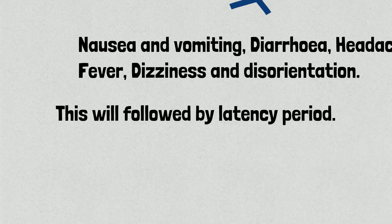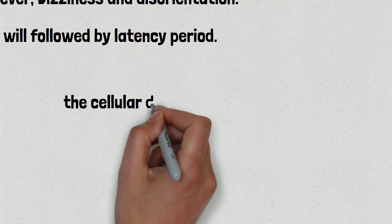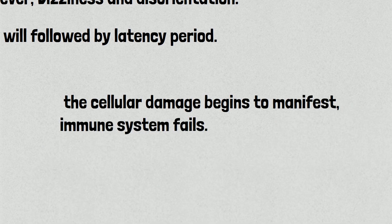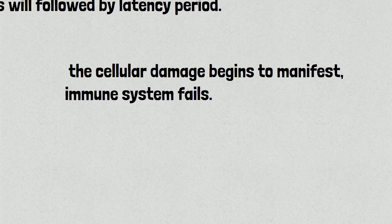This will be followed by a latency period. During this period the person appears to recover but they actually do not. This lasts for a day or two. After that, the cellular damage begins to manifest. The immune system fails, bone marrow dies, then within two days to three weeks the person is dead.